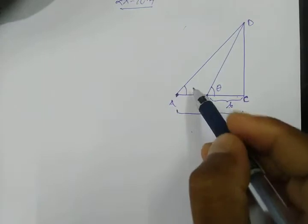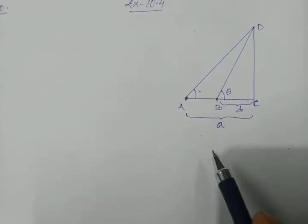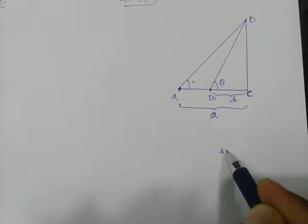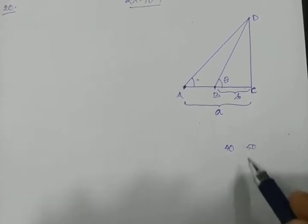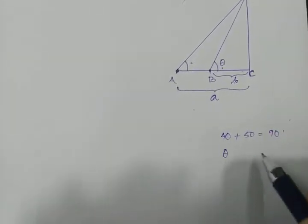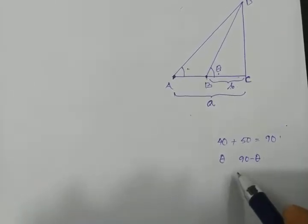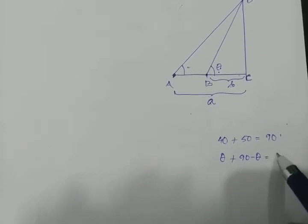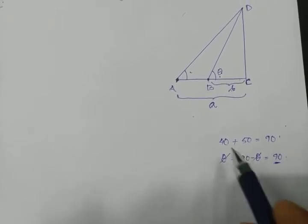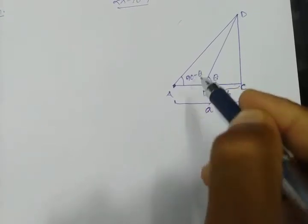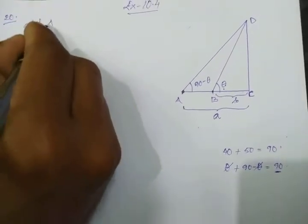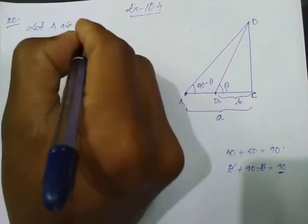This is the other line of sight making an angle of elevation complementary to theta. When we say two angles are complementary, their sum should be 90 degrees. For example, the complementary of 40 is 50, because adding them gives 90. So in our case, if one angle is theta, the other should be 90 minus theta, because adding these two gives exactly 90 degrees.